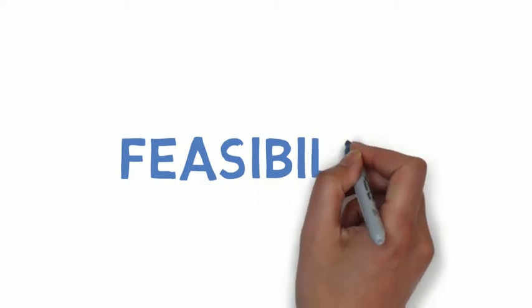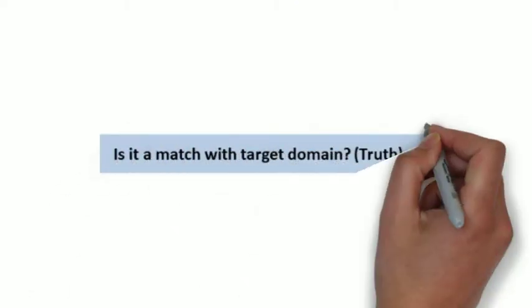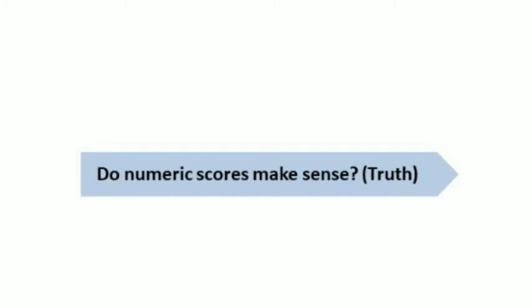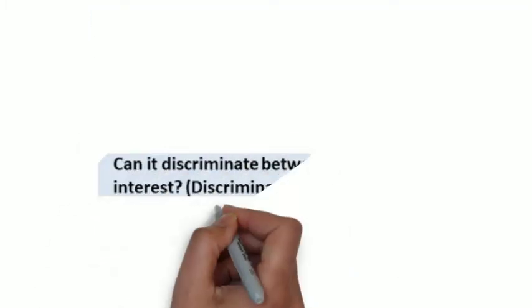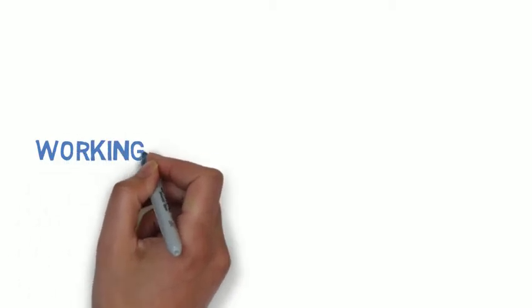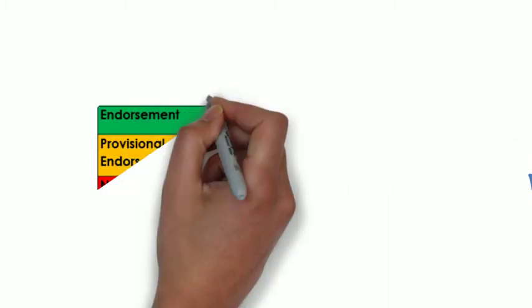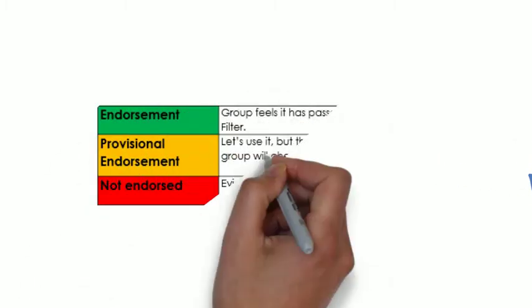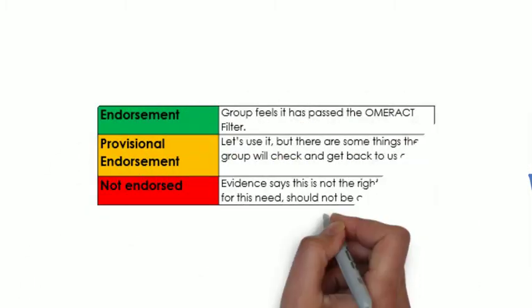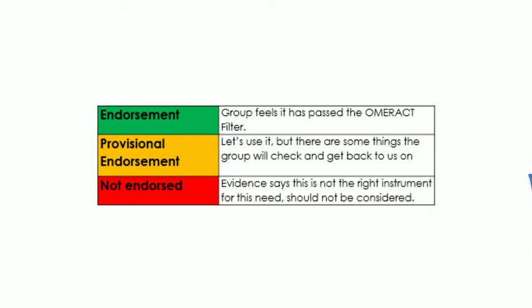These pillars are operationalized by asking four questions. One, is it a match with the target domain? Two, is it practical to use? Three, do numeric scores make sense? And four, can it discriminate between groups of interest? From the results of these four questions, an OMRACT working group will make a recommendation for the use of the instrument as either endorsed, provisionally endorsed, meaning there are some cautions about the evidence for the instrument and additional research is needed, but is good enough for now, or not endorsed.